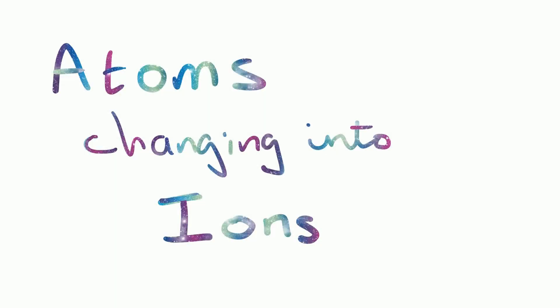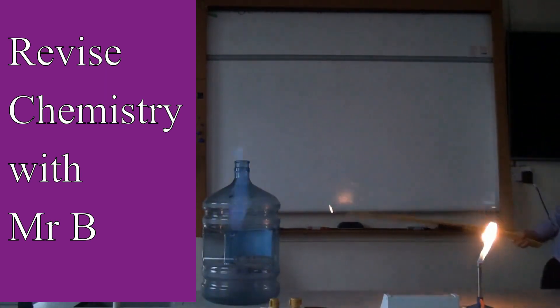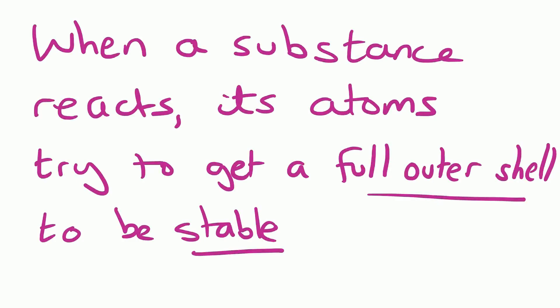In this video we look at how atoms change into ions, including how you work out the charge on an ion. We need to remember that when a substance reacts, its atoms try to get a full outer shell to be stable.